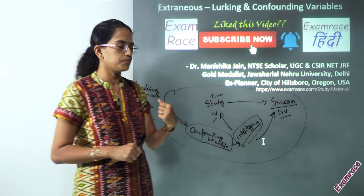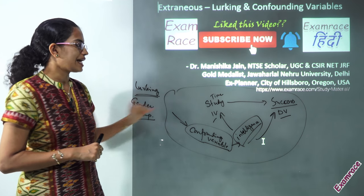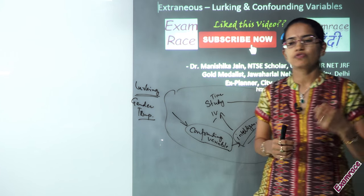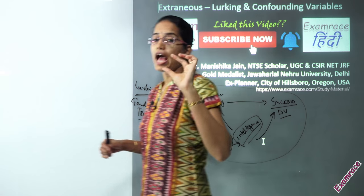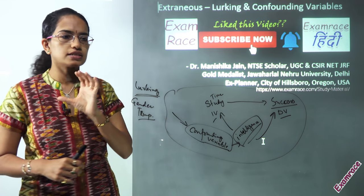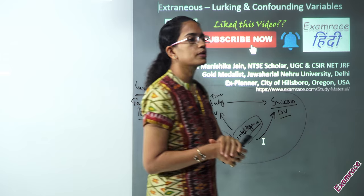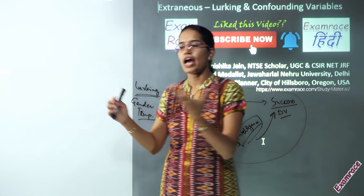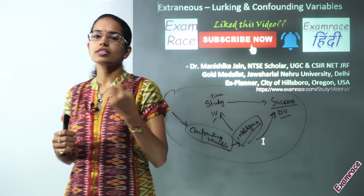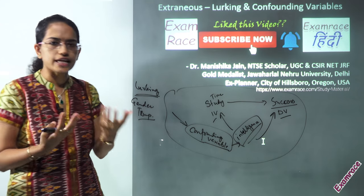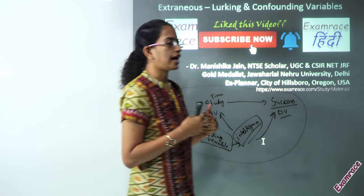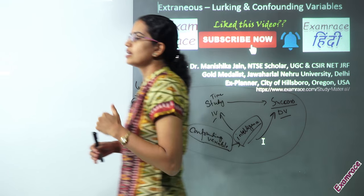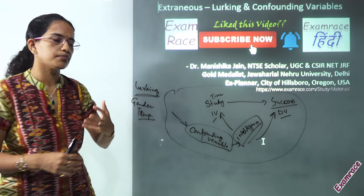Besides confounding and lurking, there are other extraneous variables. For example, a physical variable — a drug is effective at 25 degrees Celsius, but if kept at 50 degrees Celsius, the drug would have a different result or the ingredients could react differently. That is an example of a physical extraneous variable.